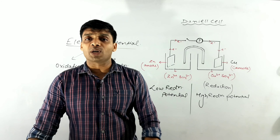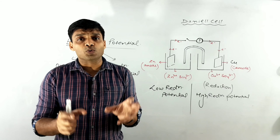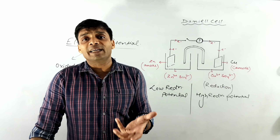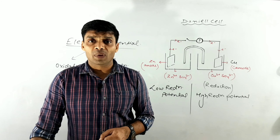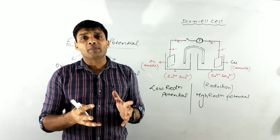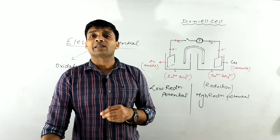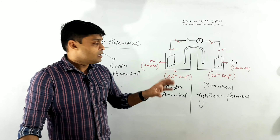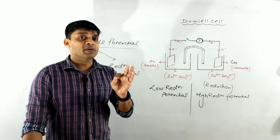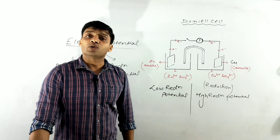The reason we use only reduction potential terms is to avoid confusion from using two different names. So we simply study cells in terms of reduction potential. In any electrochemical cell: the anode is always at low reduction potential and the cathode is always at high reduction potential. Electrons always flow from low reduction potential to high reduction potential — that is, from anode to cathode.